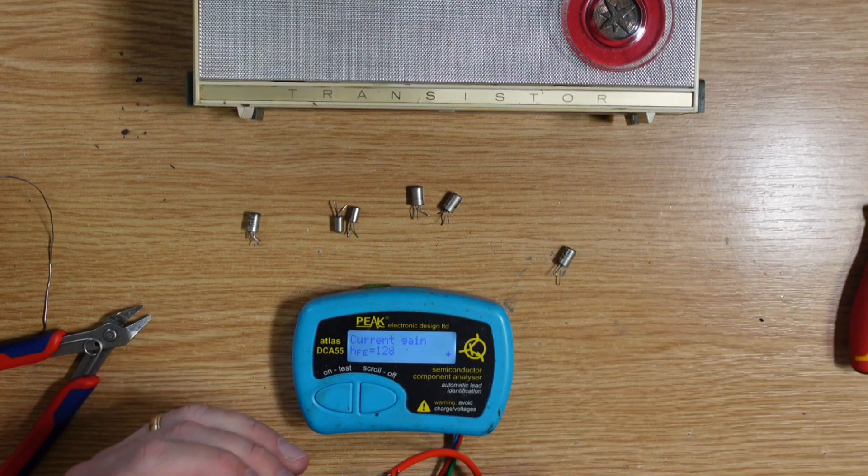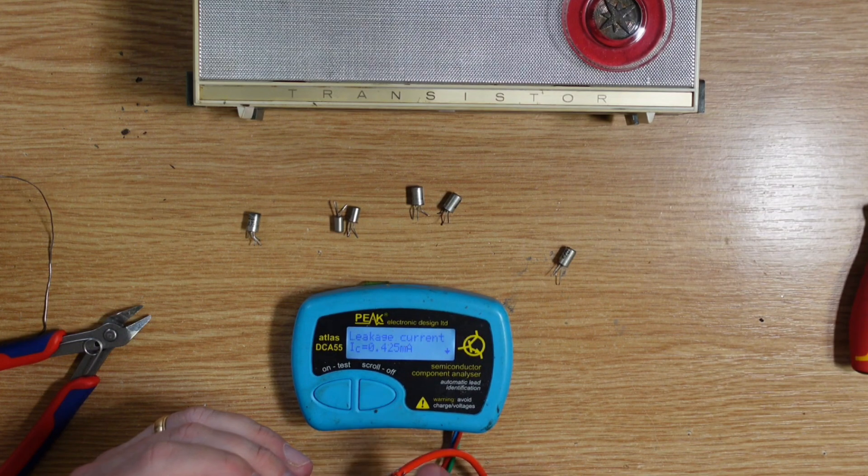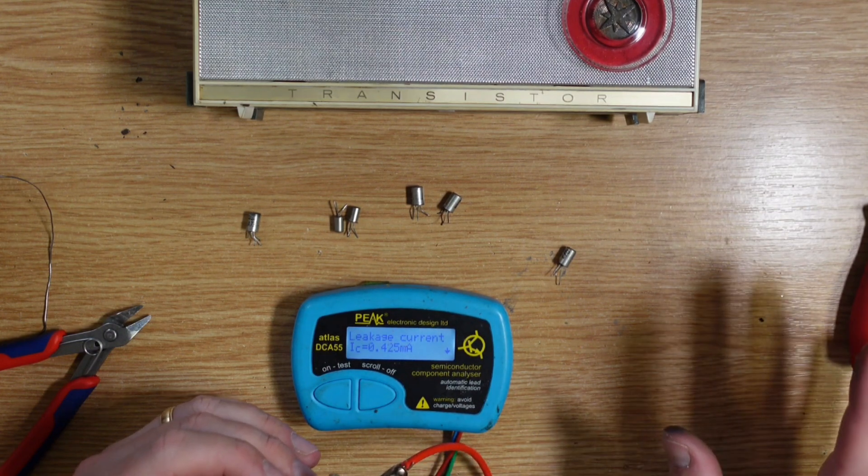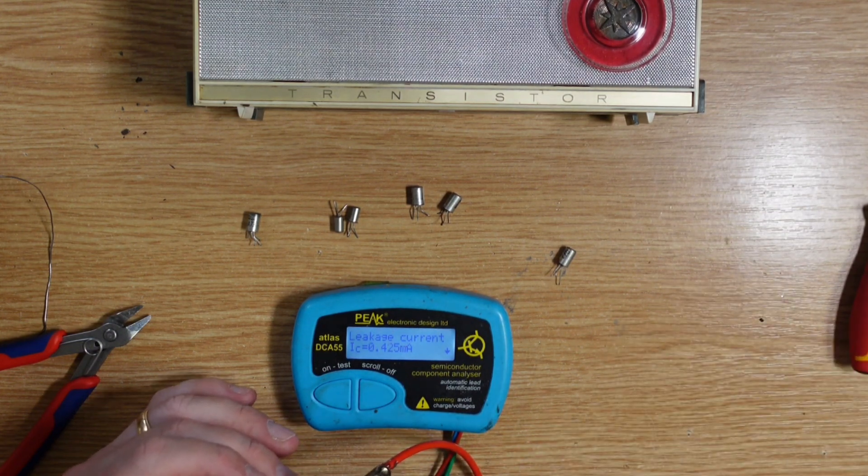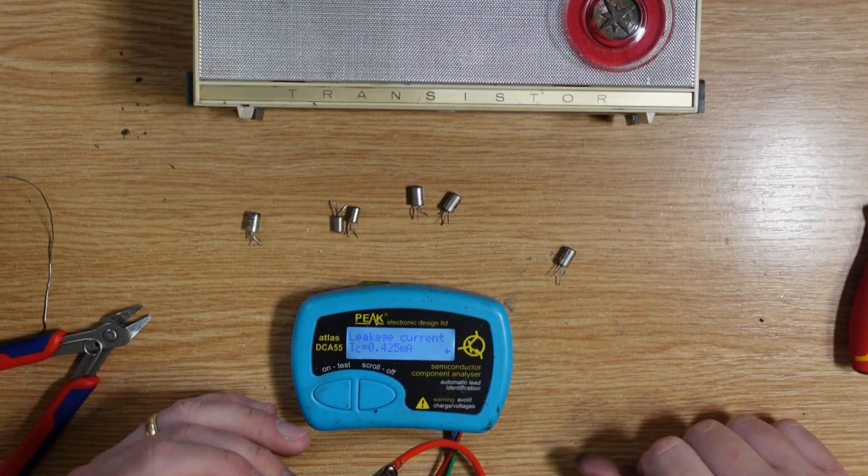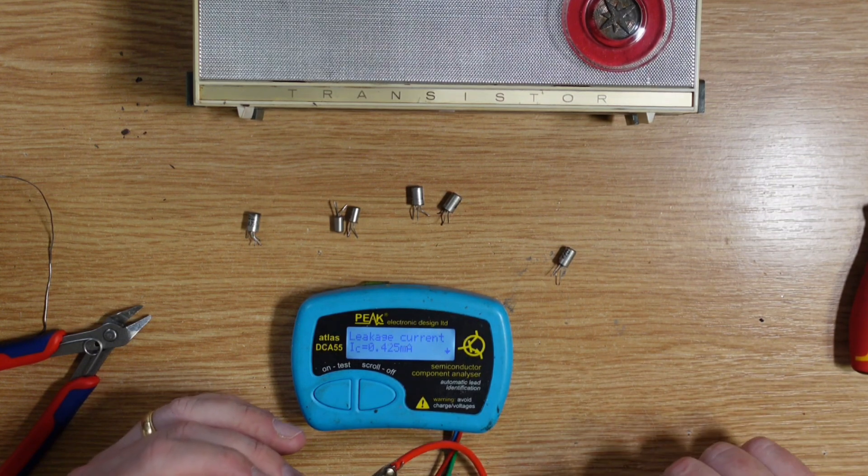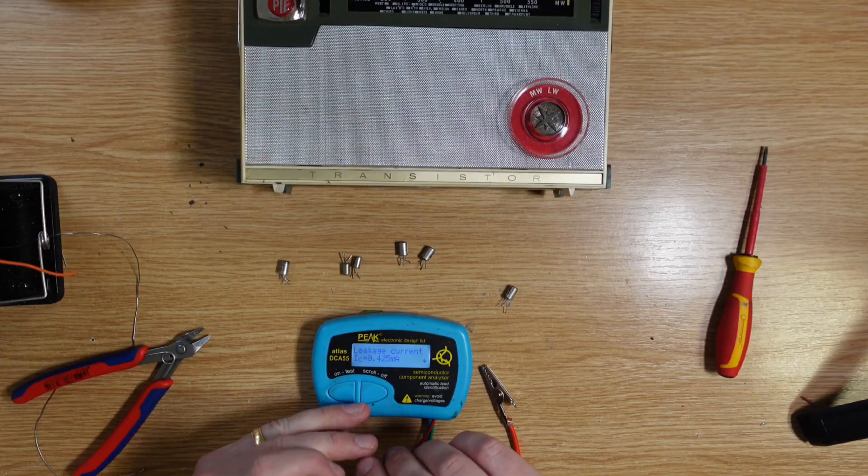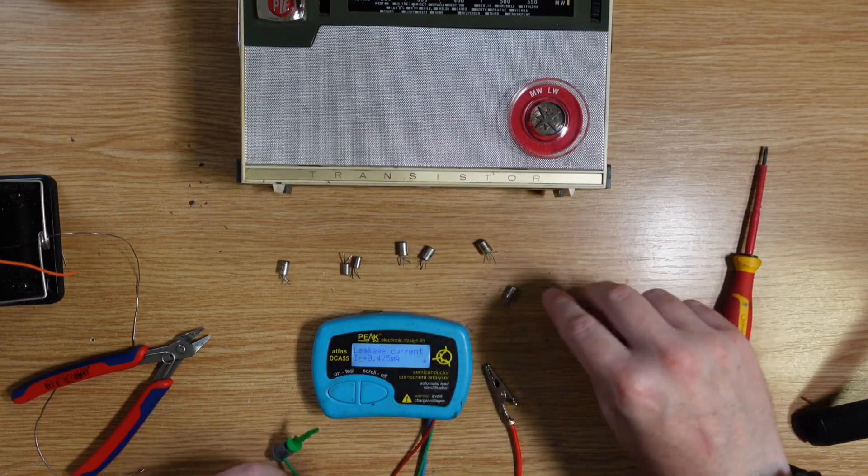So our 278. 128 HFE, so the gain is right up there. Happy with that. And it's got a leakage of 425, which makes it completely unusable in anything other than a germanium buffer or one of my octave pedals. Still, not bad.